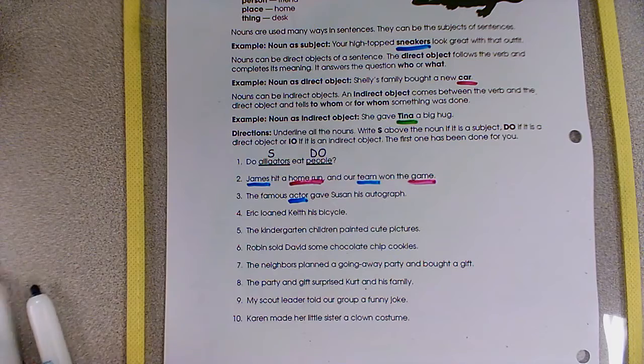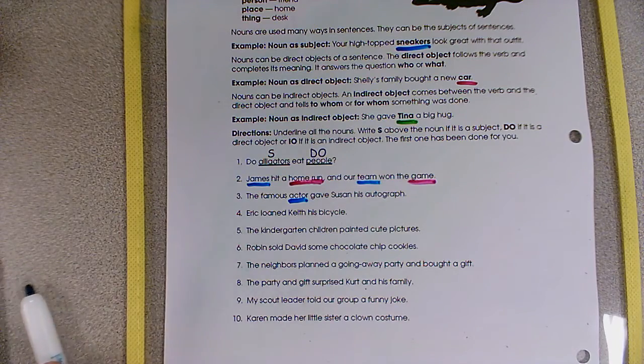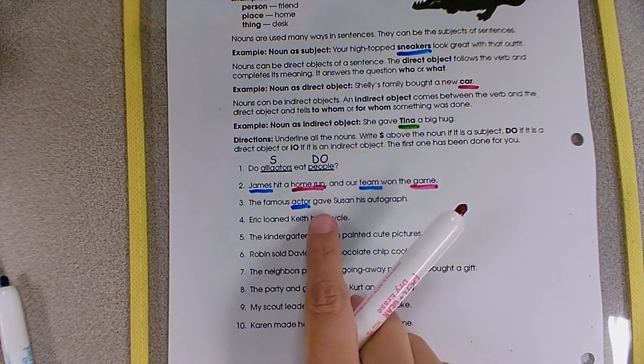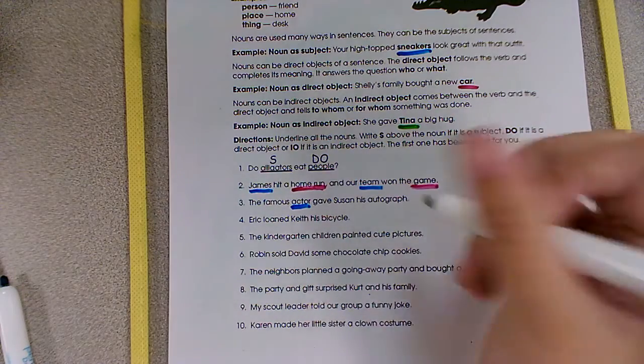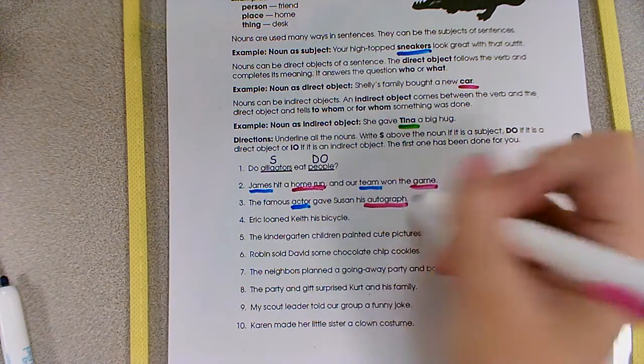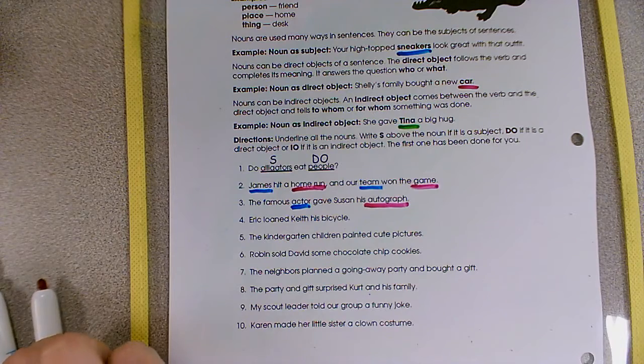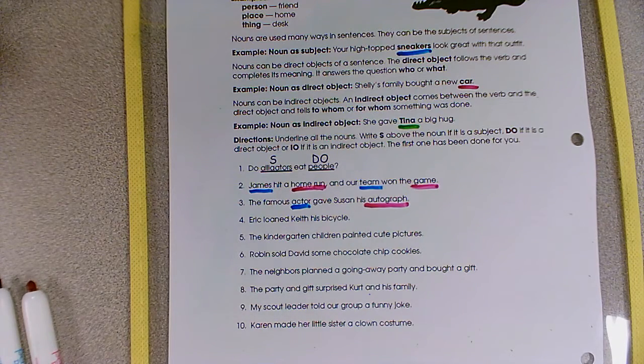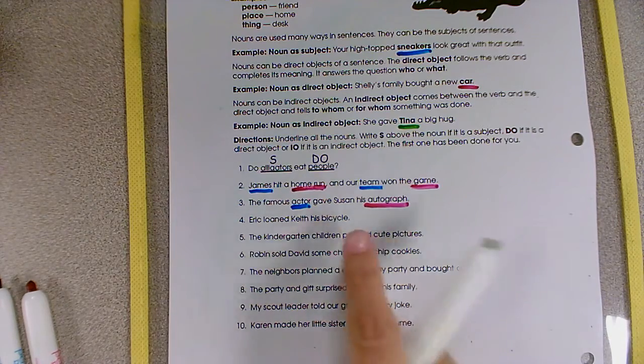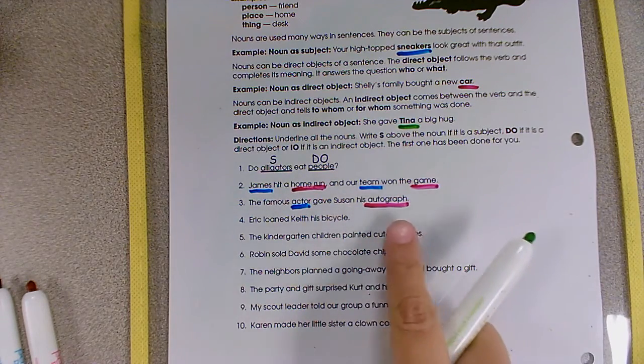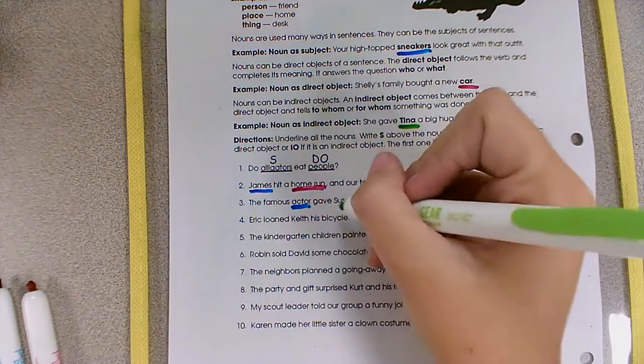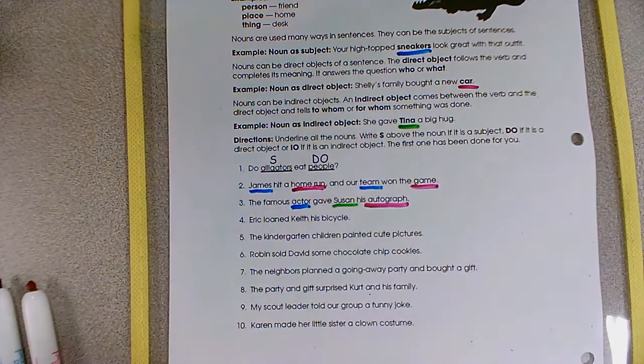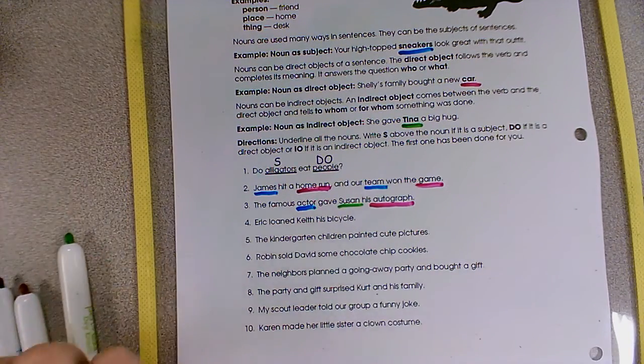Actor is our subject. Then we can think, what is our direct object? Actor gave what? His autograph. Autograph is our direct object. We also have an indirect object. Remember, the indirect object comes between the verb and the direct object. That would be Susan. It also tells us who the actor gave his autograph to.